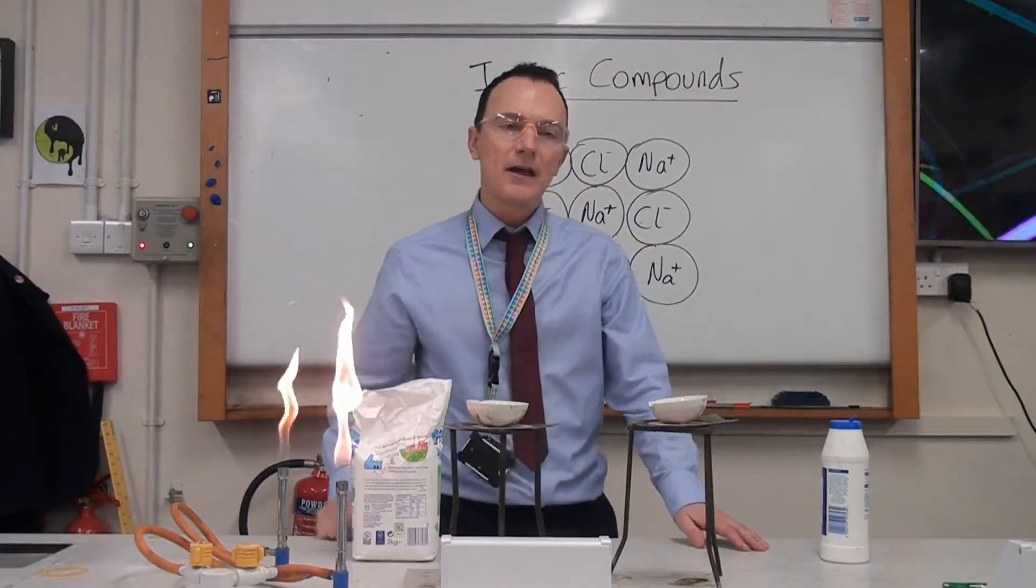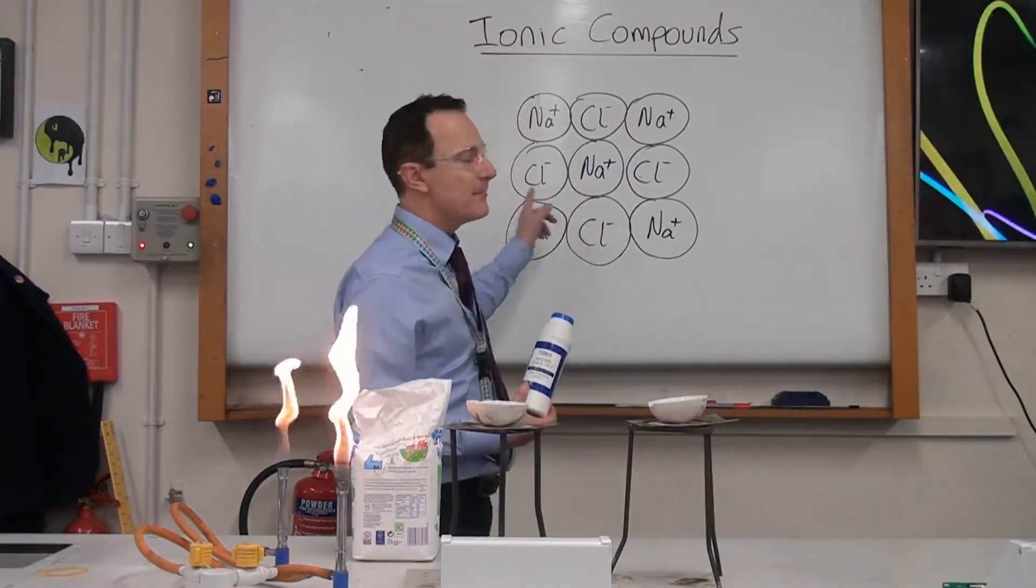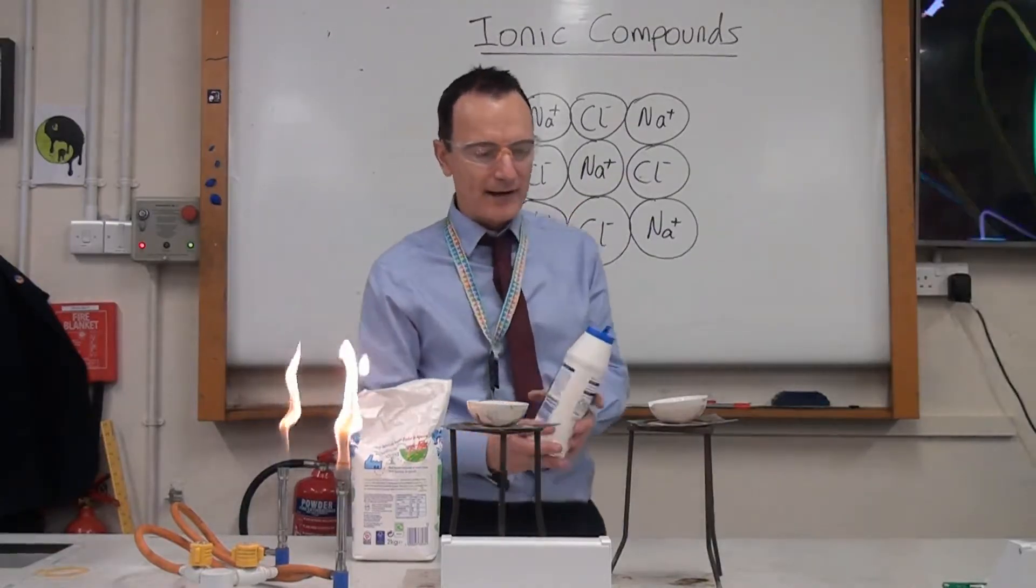And the first property we're going to look at is the melting point. So I've got an ionic substance here, salt, which is sodium chloride, made of sodium ions joined to chloride ions.